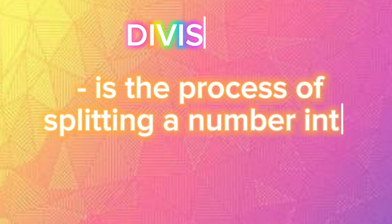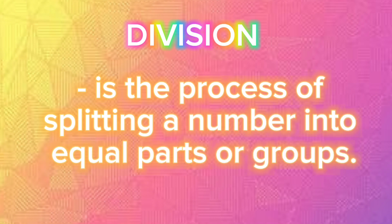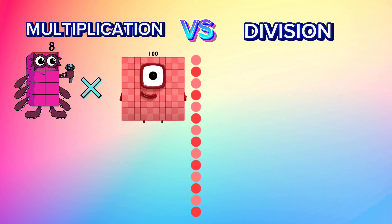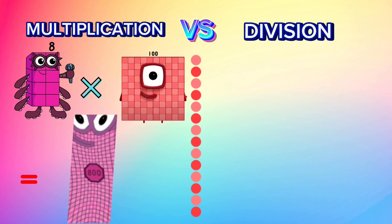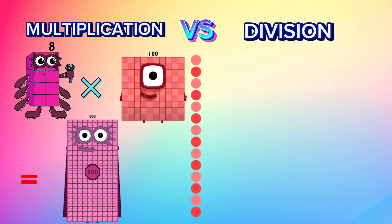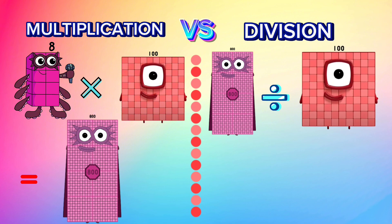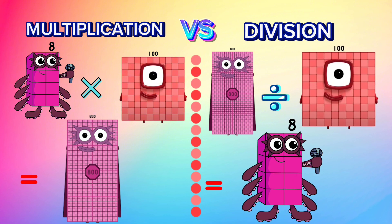Division is the process of splitting a number into equal parts or groups. 8 multiplied by 100 is equal to 800. Let's compare it to division: 800 divided by 100 is equal to 8.